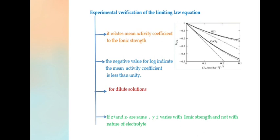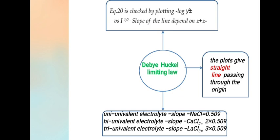The negative value for log indicates the mean activity coefficient is less than unity. Since log(γ±) is negative, it is less than 1. It is used for dilute solution. Z+ and Z- are same. γ± varies with ionic strength and not with the nature of electrolyte.